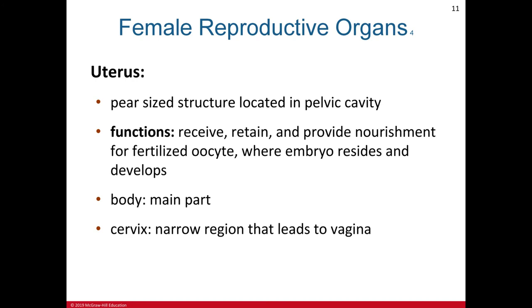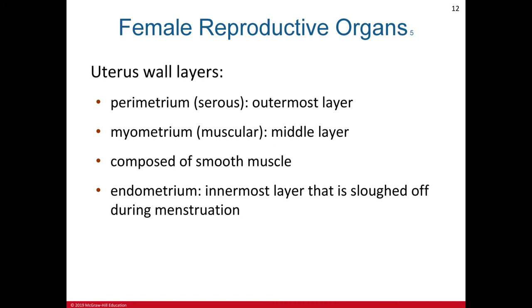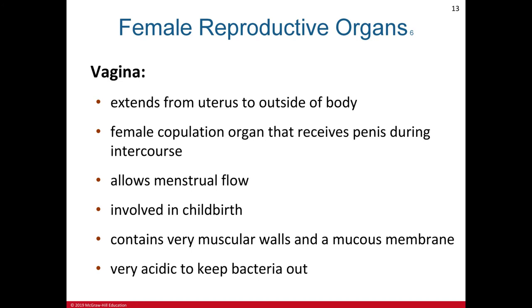The uterus is composed of the cervix, a narrow region that extends into the vagina, and is divided into three wall layers: the outermost layer called the perimetrium (serosa), the middle muscular layer called the myometrium composed of smooth muscle cells, and the innermost epithelial layer called the endometrium, which is shed during menstruation.